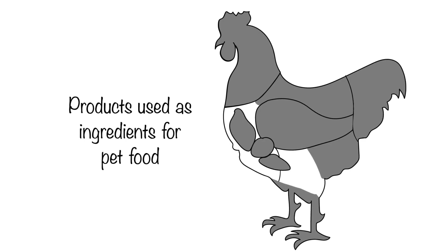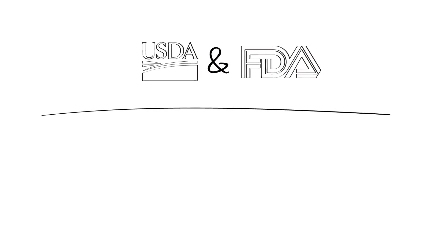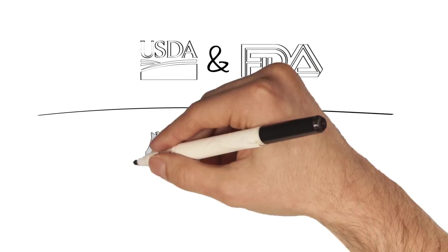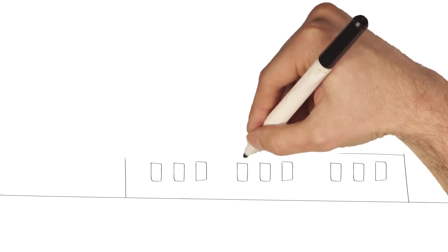Did you know that pet food is among the most highly regulated of all food products? Before an ingredient can be used in a pet food recipe, it must be recognized at federal and state levels. And just like human food, the manufacturing of pet food requires following rigorous safety and quality protocols.